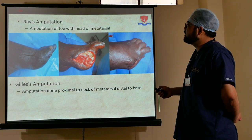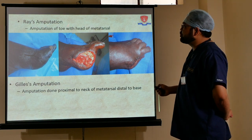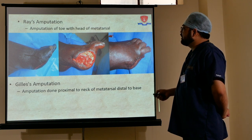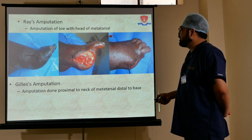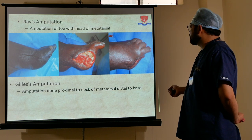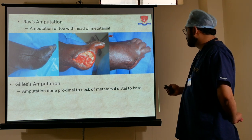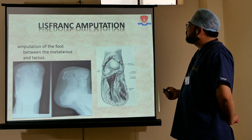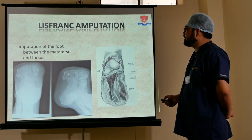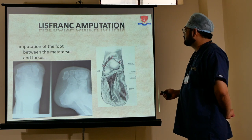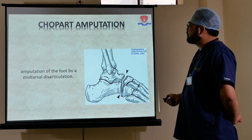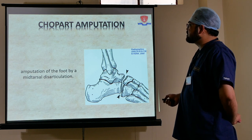Specific foot amputations: Ray amputation is amputation of the toe with the head of the metatarsal. Gillies amputation is amputation proximal to the neck of the metatarsal but distal to the base. Lisfranc amputation is amputation of the foot between the metatarsals and tarsals. Chopart amputation is amputation of the foot by mid-tarsal disarticulation.